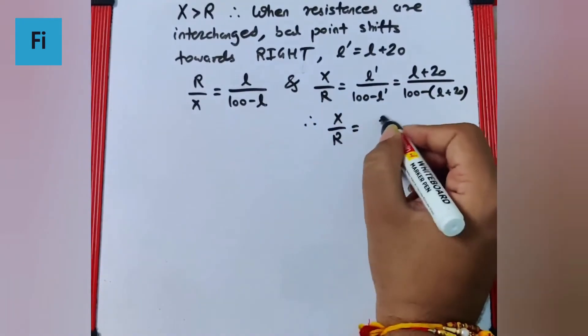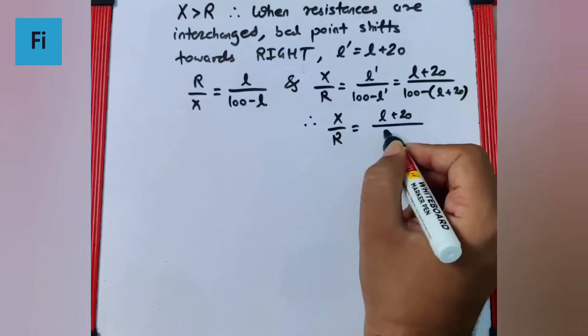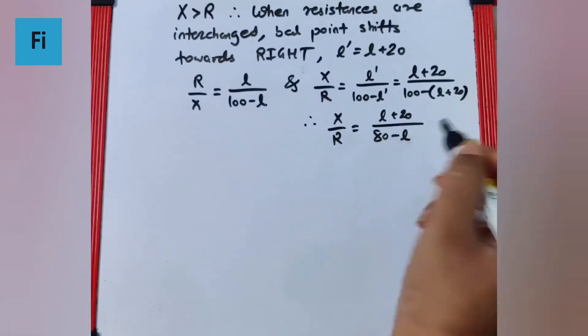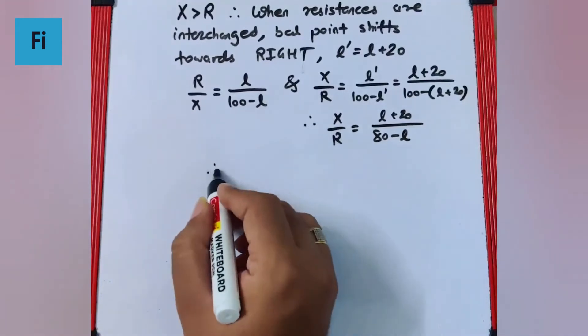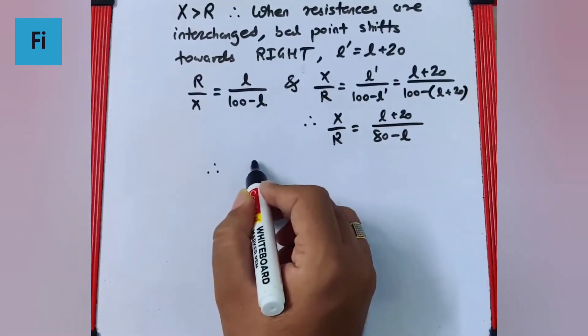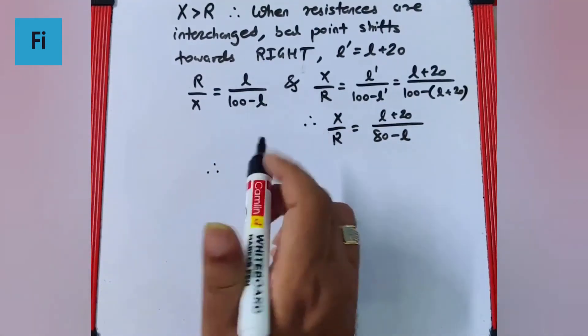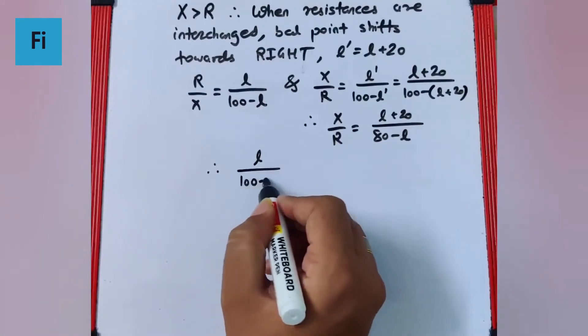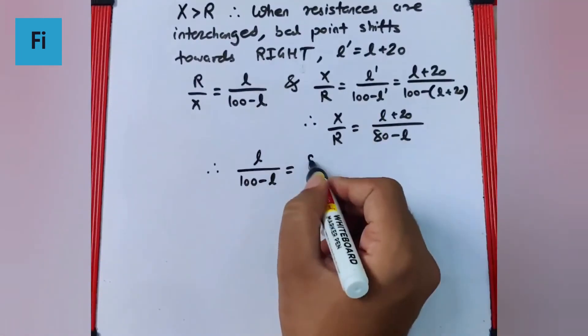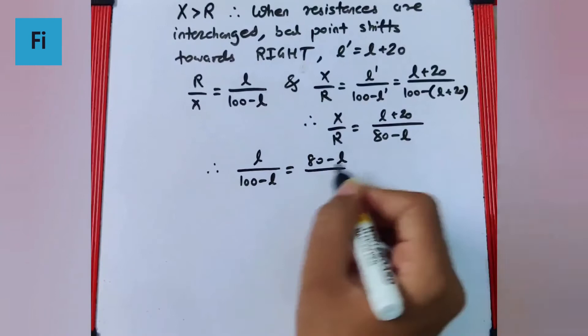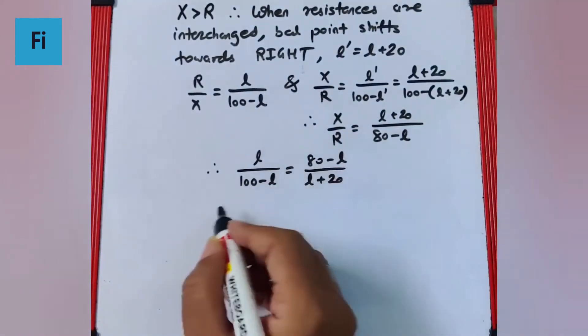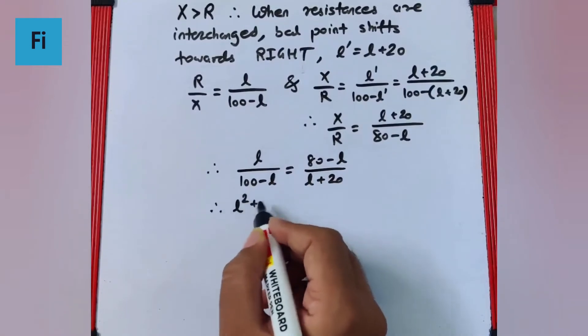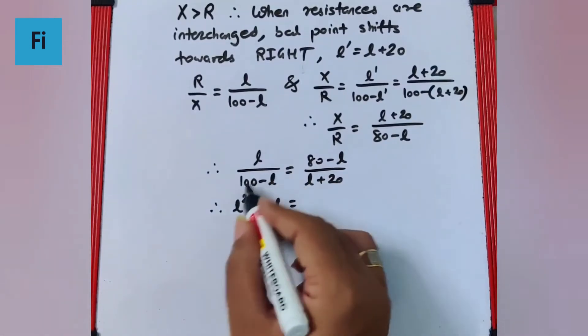If I consider this as two equations, I can say the reciprocals are equal. So L upon 100 minus L is going to be equal to the reciprocal of this, that is 80 minus L upon L plus 20.